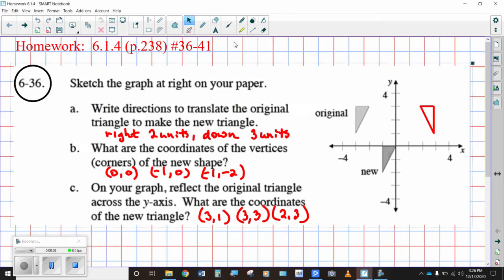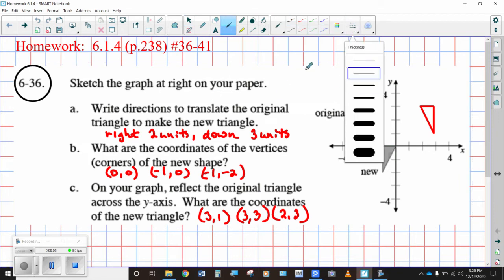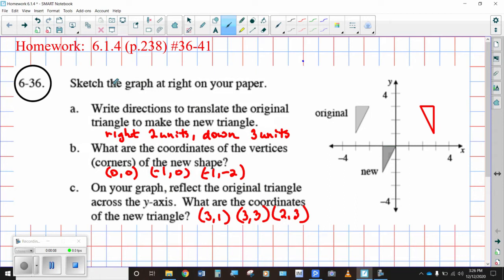Let's take a look at our homework for Lesson 6.1.4. Starting off with this set of transformations, it says sketch the graph at the right on your paper, and then write directions to translate, that's the slide, the original triangle here into the new triangle here. So in order to do this, all you have to do is focus on one set of corresponding points, the vertices here or here and here or there and there, but I'm going to choose this one.